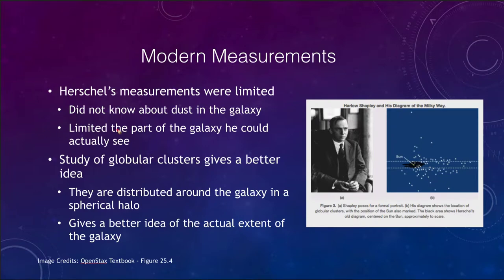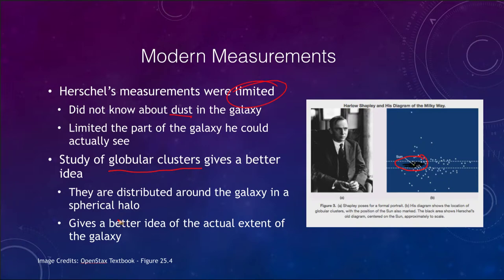Herschel's measurements were limited because he did not know about dust, which limited the part of the galaxy he was actually able to view. His map covers just this little black section here — only a very small part of our galaxy. However, looking at globular clusters gives us a better idea, because they are distributed pretty much uniformly around the galaxy in a spherical halo. Each of the dots here represents a globular cluster; they can be seen over large distances.